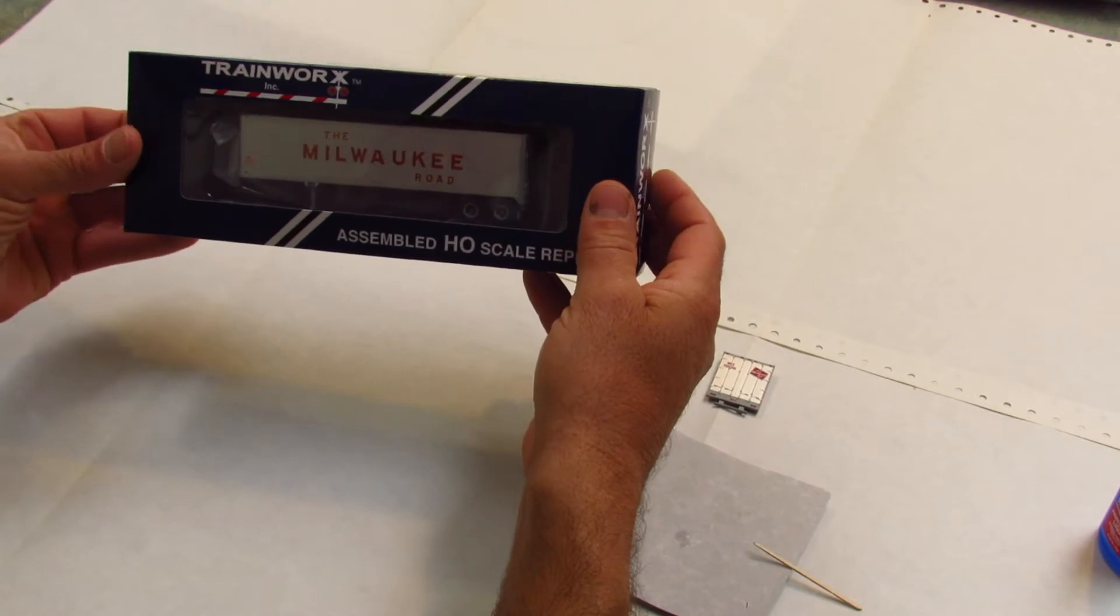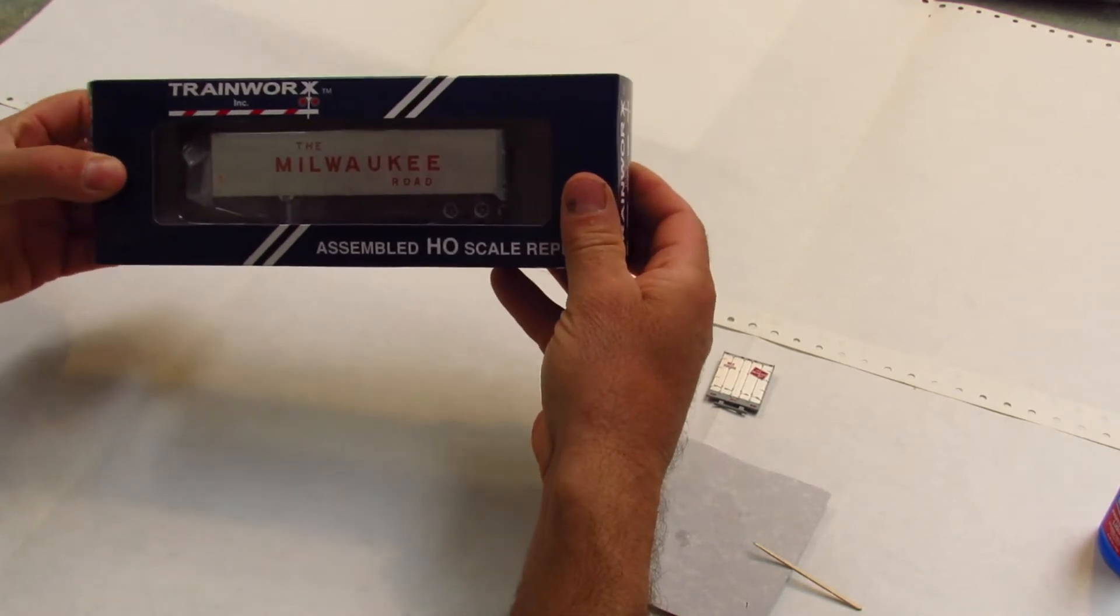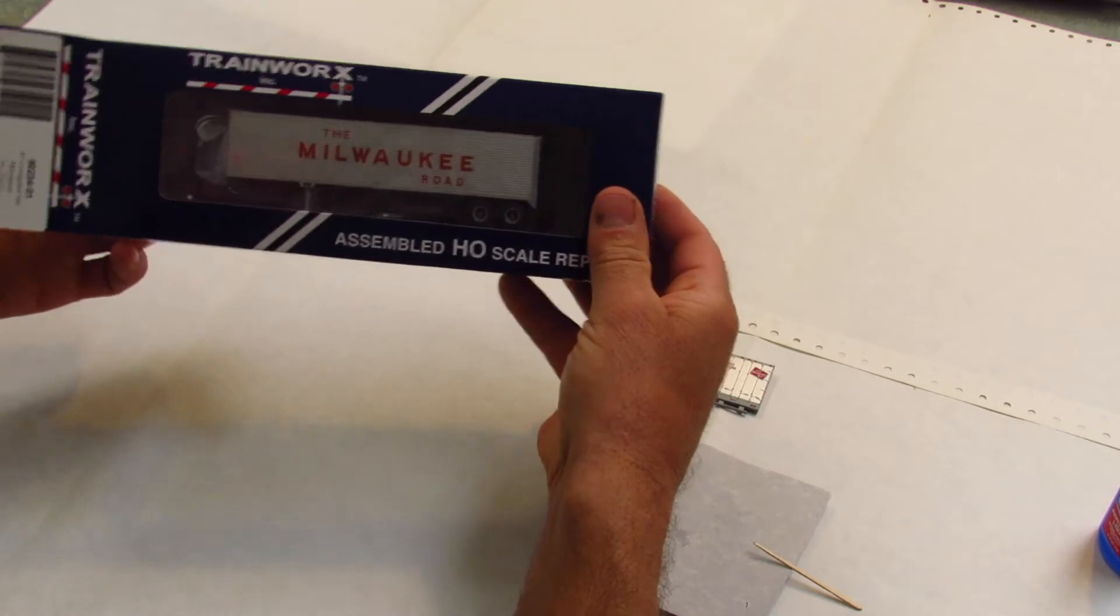This is a Trainworks HO scale brown semi-trailer decorated from Milwaukee. Today we're going to go over a door replacement.